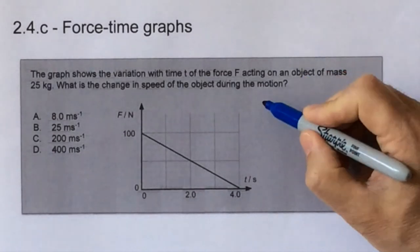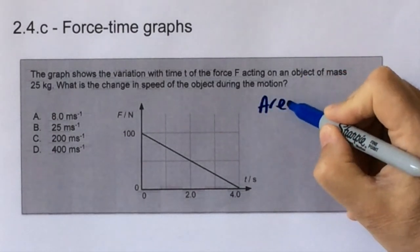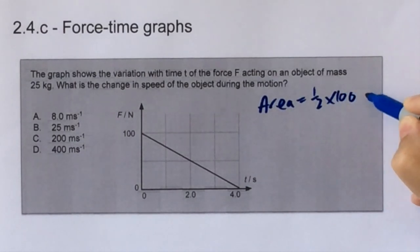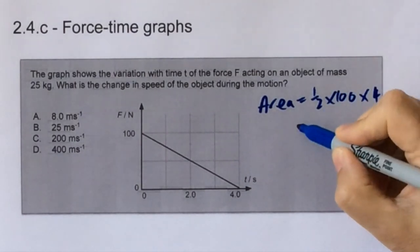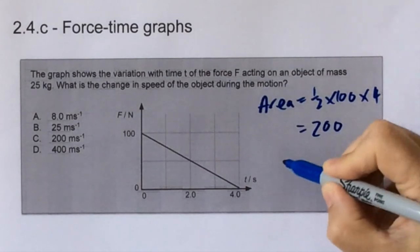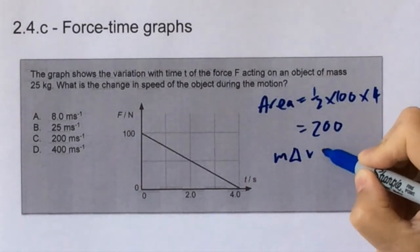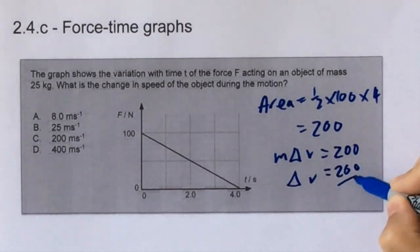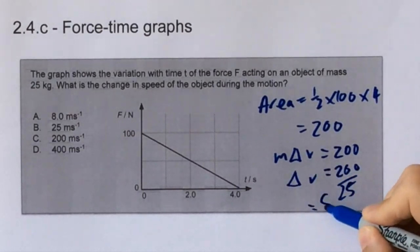The area under the force-time graph is the impulse. And that's half times 100 times 4 on this graph, which gives us 200. We equate that to mass times the change in velocity, because we know that that's what we want to know. And then when we rearrange it, we find that the answer is 8 meters per second.